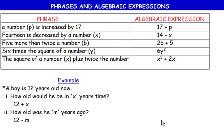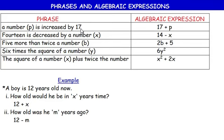Now let's look at phrases and algebraic expressions. Maths can be communicated in words — word problems. If I say a number p is increased by 17, how do you write it mathematically? It's simply p + 17. Just like 17 increased by 3 gives 20 via 17 + 3.